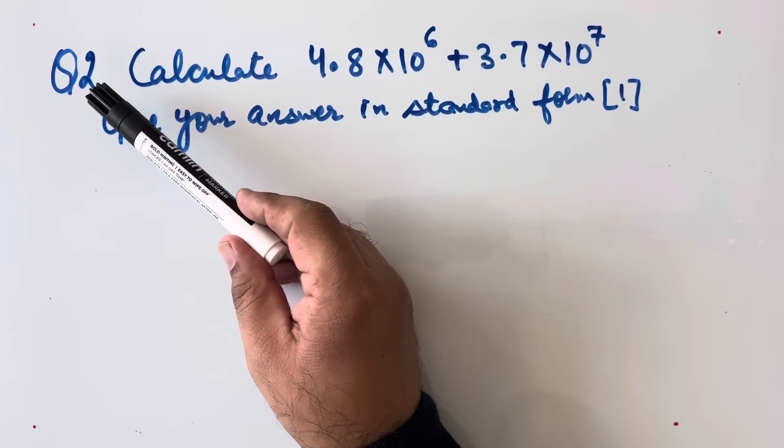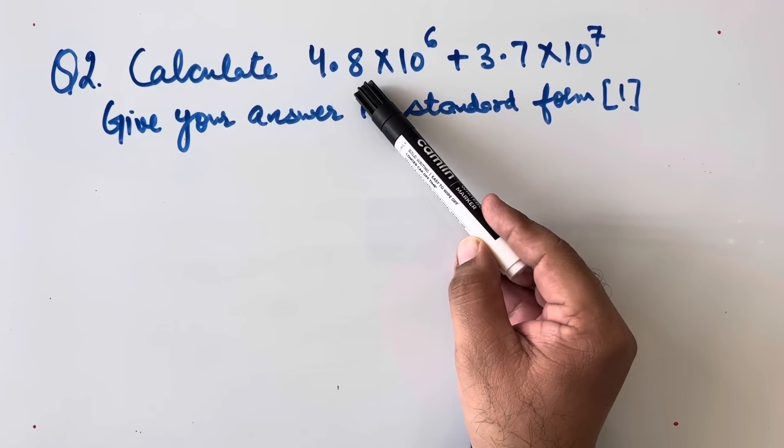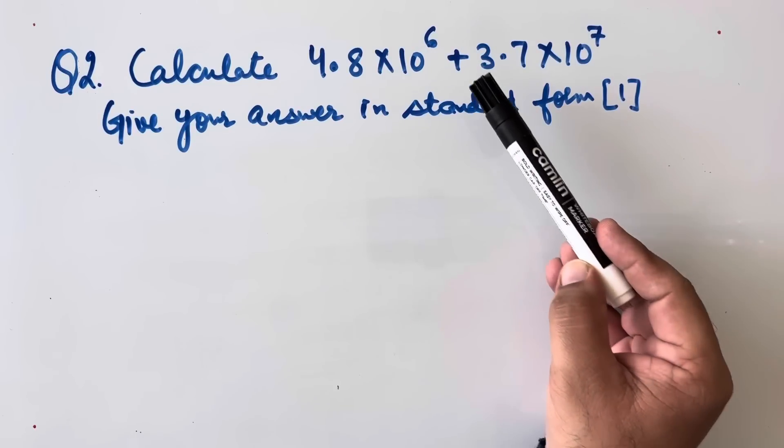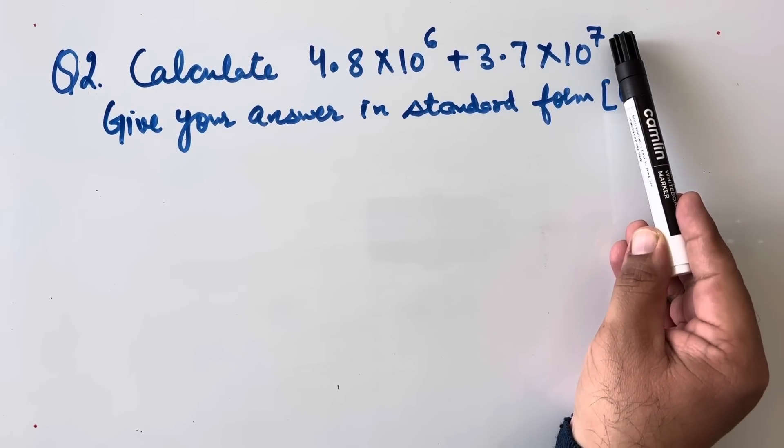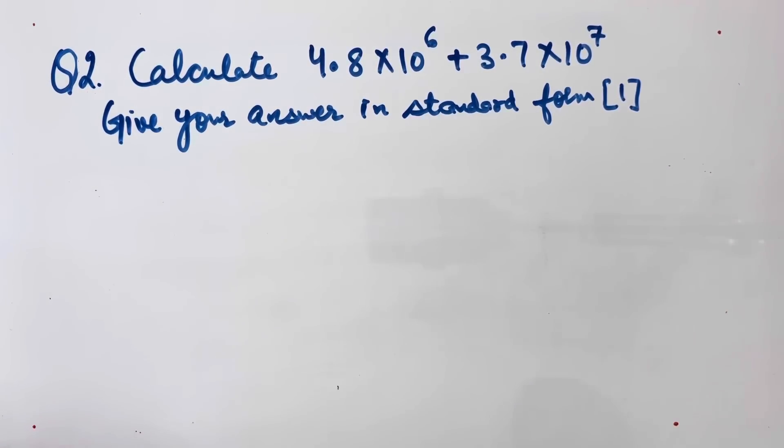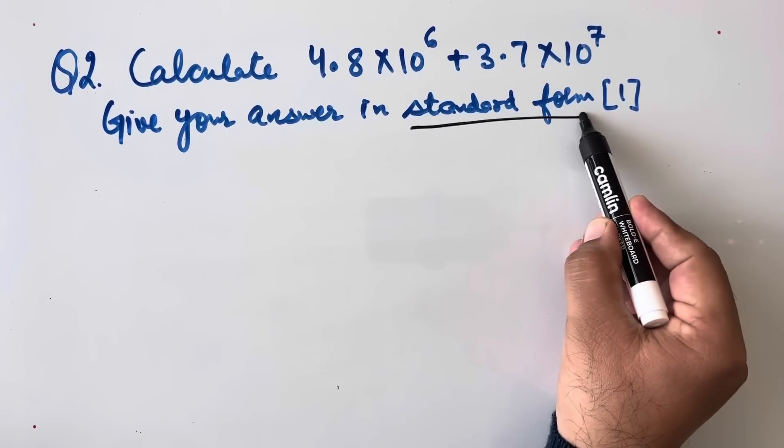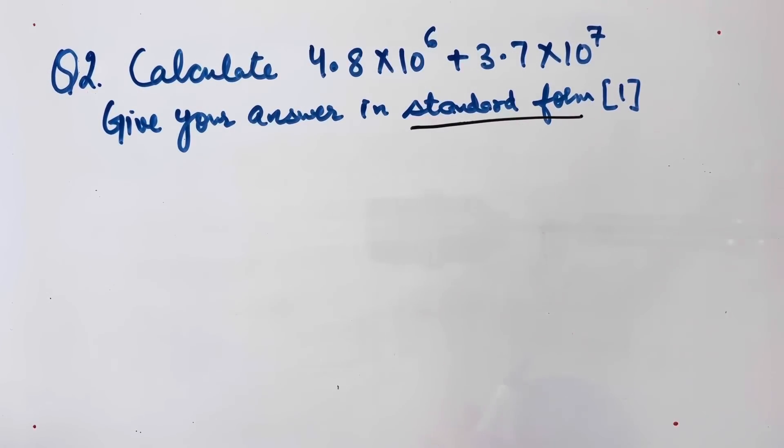Now question number 2. Calculate 4.8 × 10^6 plus 3.7 × 10^7. Give your answer in standard form. This is also of one mark.